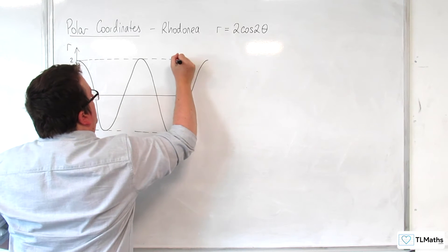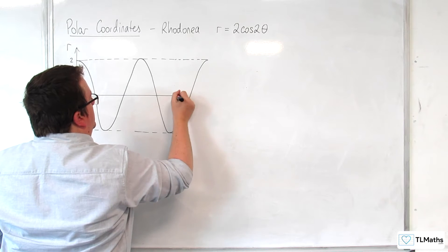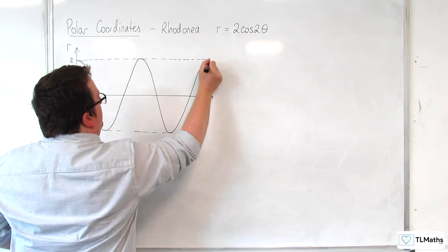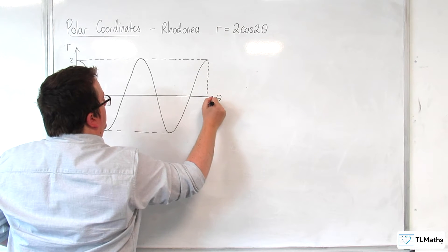We're going to run out of room. Let's cheat it a little bit. Here we go. So, that's at 2 pi.